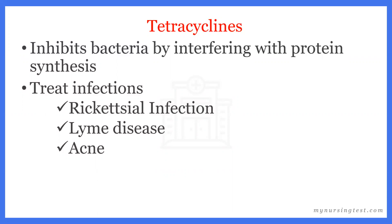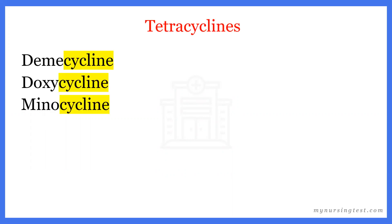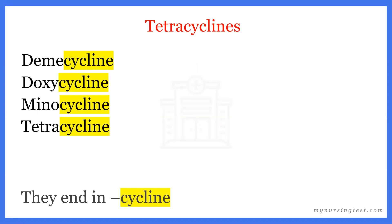So how do we identify a tetracycline? Here is a memory tip for you. You will see demecycline, doxycycline, minocycline, and tetracycline. Tetracycline is not just a class — it's also a medication. But if you notice one thing about all of these medication names, they all end in '-cycline.' So tetracyclines end in '-cycline.' That's just a tip there.